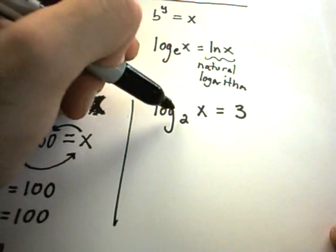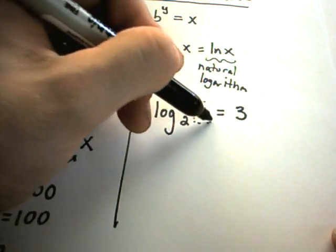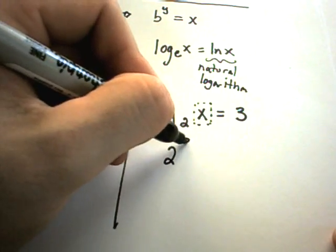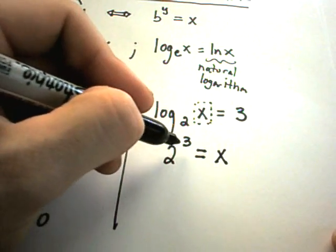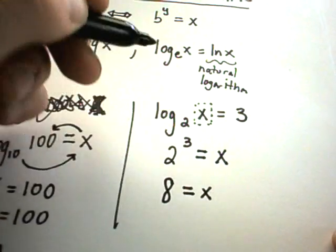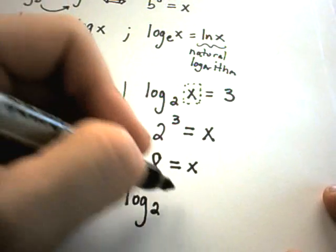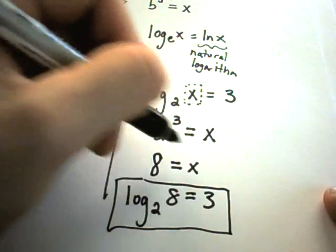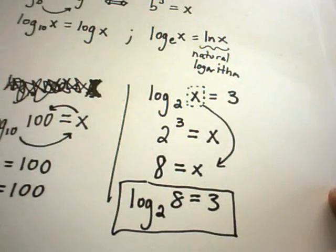The same way, suppose we have log base 2 of something equaling 3, and we want to know what value should go in there for x. Well, again, if you convert 2 to the 3rd power is equivalent to our value on the inside x, and 2 to the 3rd is 2 times 2 times 2, which is 8. So, it says what we should have then is log base 2 of 8. That's what equals 3. So, in this case, our solution would be x equals 8 if our instruction said simply solve for x.